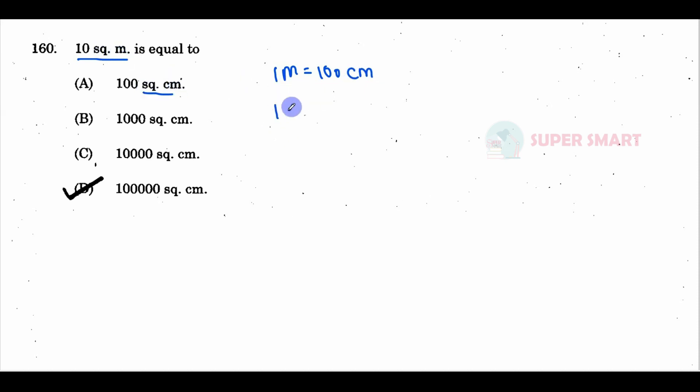1 square meter is equal to 10,000 square centimeters. So, the question is 10 square meters. 10 into 10,000 equals 100,000 square centimeters.